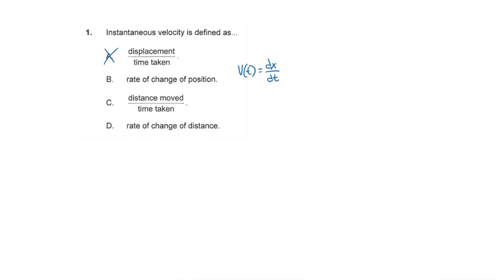So the correct answer is B. Answer choice C is looking at the speed, so that's incorrect. And answer choice D is likewise incorrect because it's also looking at speed. C would be the average speed; D is closer to instantaneous speed. But neither are accounting for direction, so they're not the right answer because velocity is a vector.